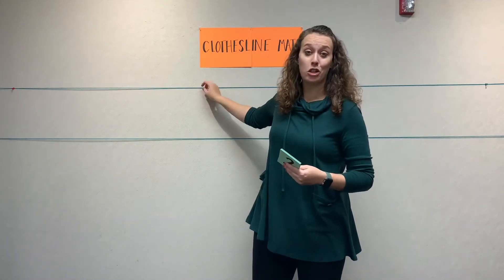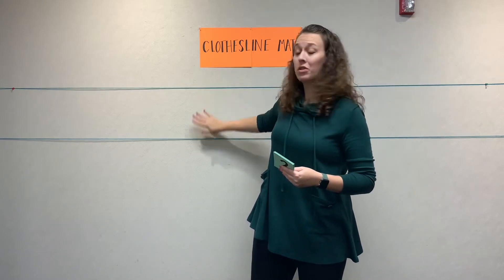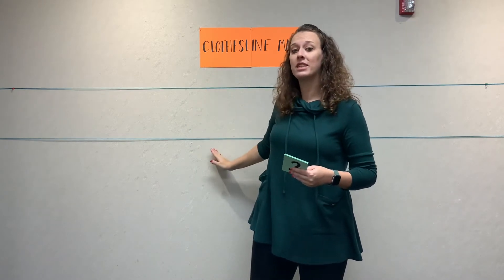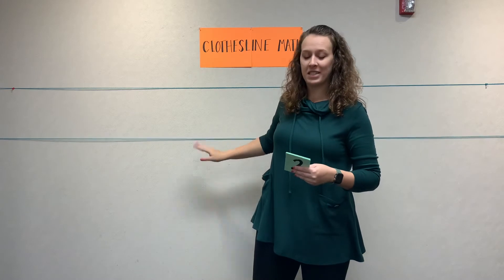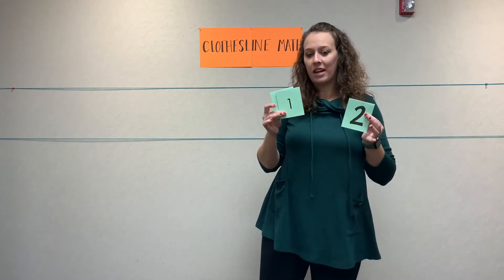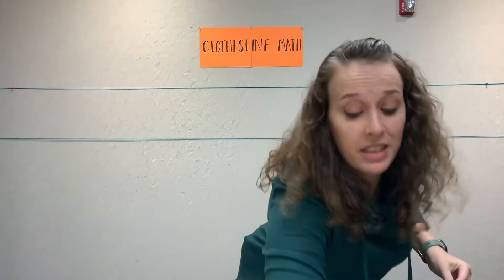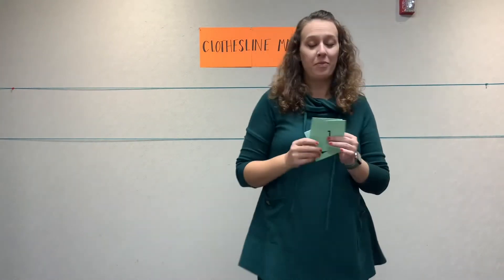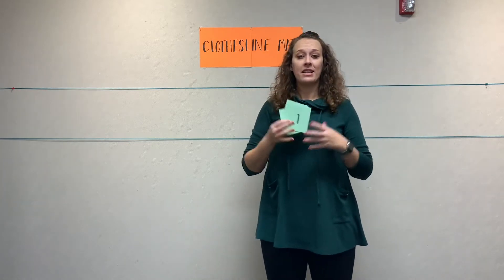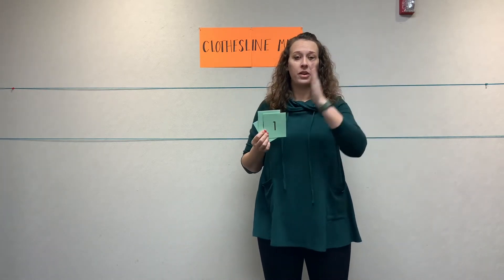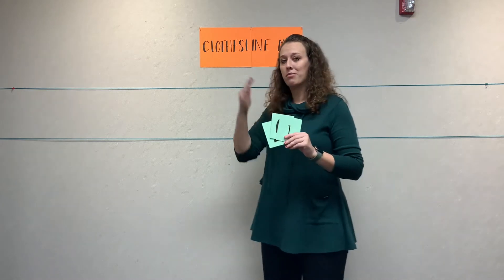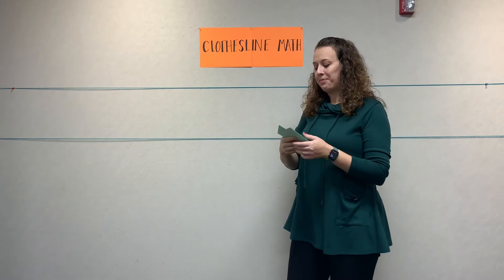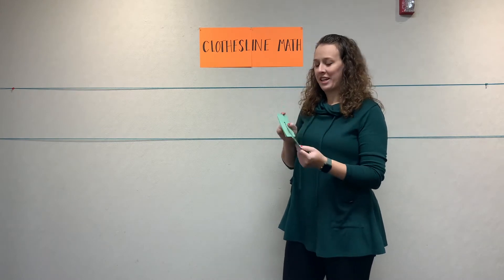Clothesline math is pretty simple. All you need is a clothesline — I choose to use a double clothesline so that I can show equivalents or multiple representations — and some cards. I have these printed out already, but you can use simple things like index cards and make them at recess right before your math block. The purpose is to really practice the scale of number and knowing where numbers are placed in relation to each other. There's a lot of research on more or less and showing a number's value.